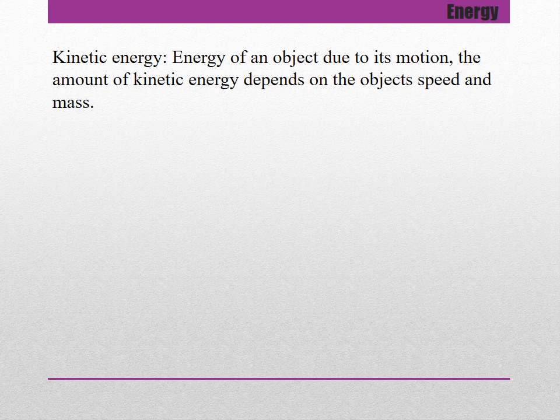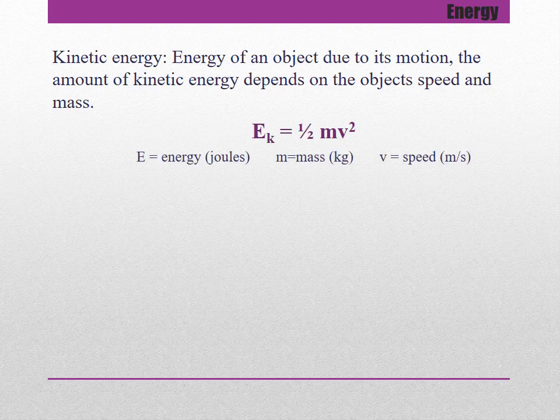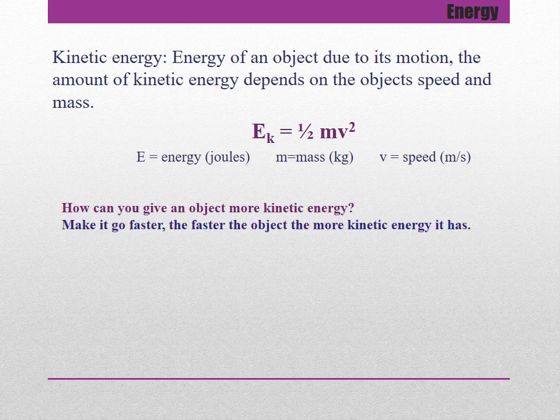Kinetic energy is the energy of an object due to its motion. The amount of kinetic energy depends on the object's speed and mass. We will talk a lot about kinetic energy next year in Physics 30. The kinetic energy is equal to half mass times velocity squared. You make it go faster — the faster the object, the more kinetic energy it has.